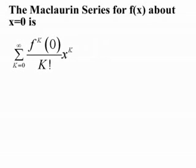We can now write a Maclaurin series for f of x. That is a Taylor series taken about x equals 0. The Maclaurin series for f of x is the sum from k equals 0 to infinity of the kth derivative of the function evaluated at 0 over k factorial times x to the k. As you can see, these are just power series — power series with coefficients a sub k equals the kth derivative of the function at 0 over k factorial.